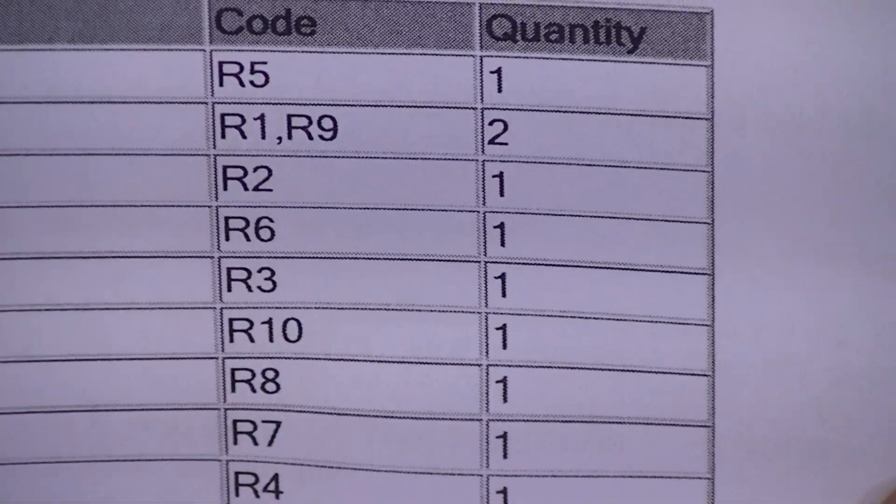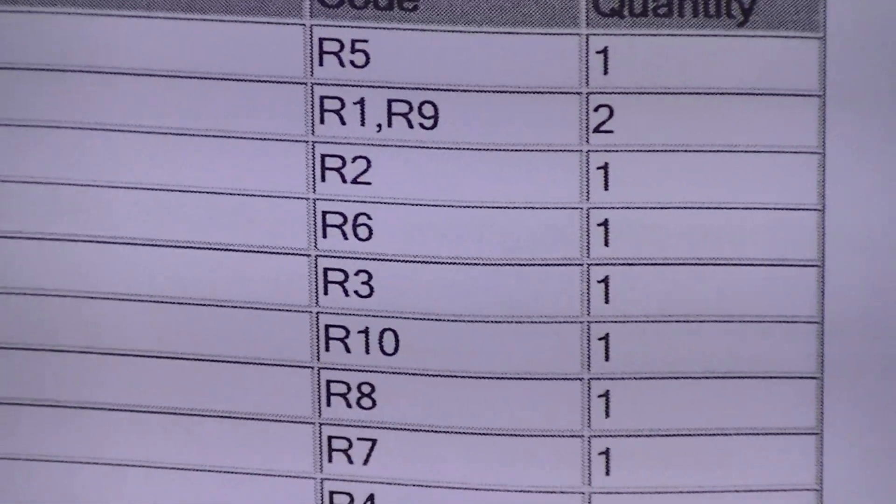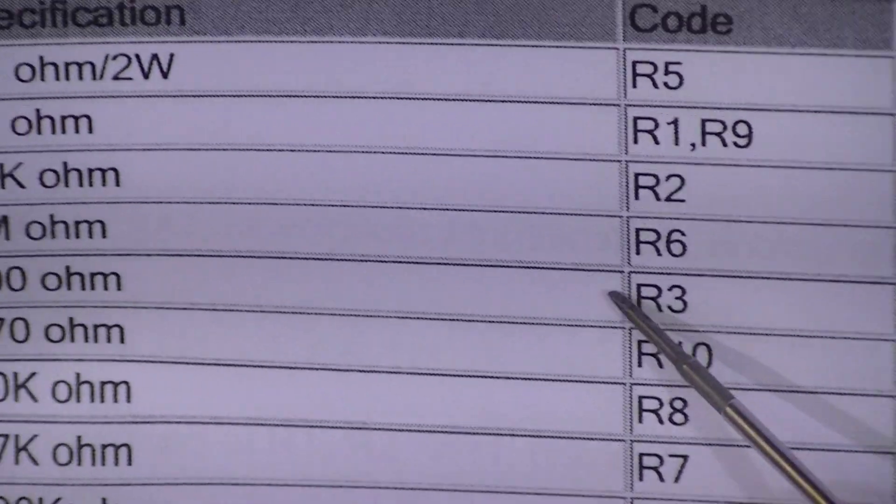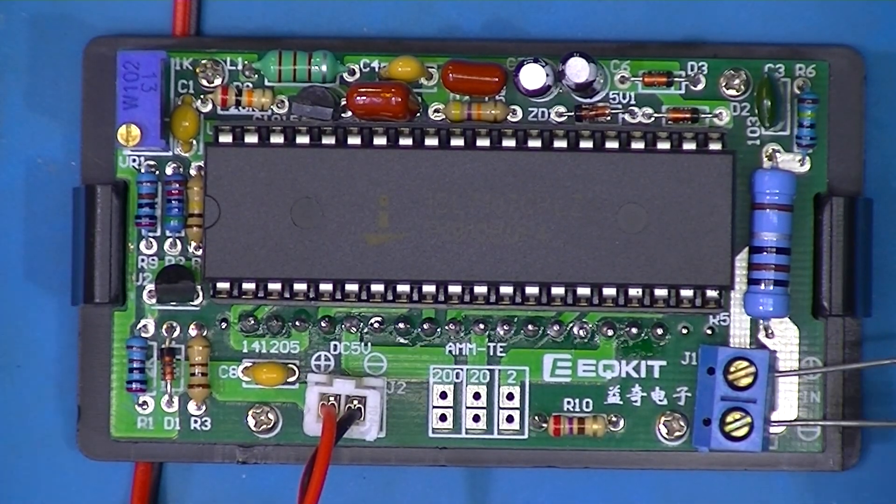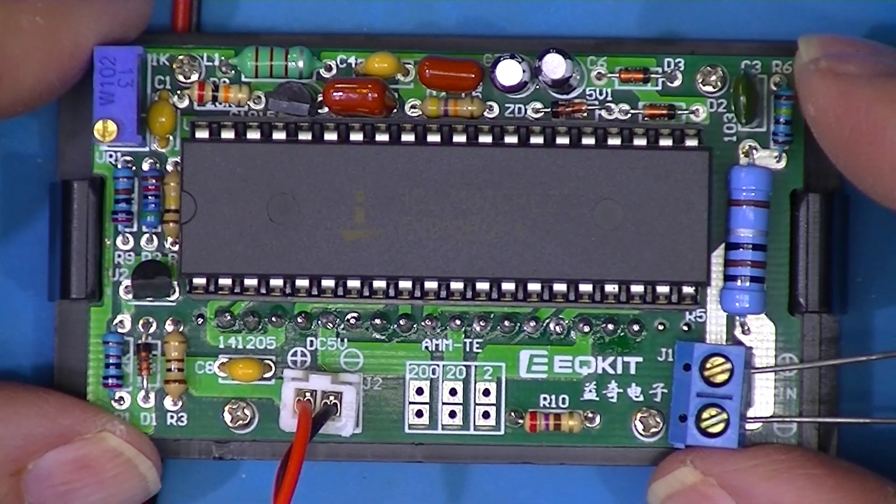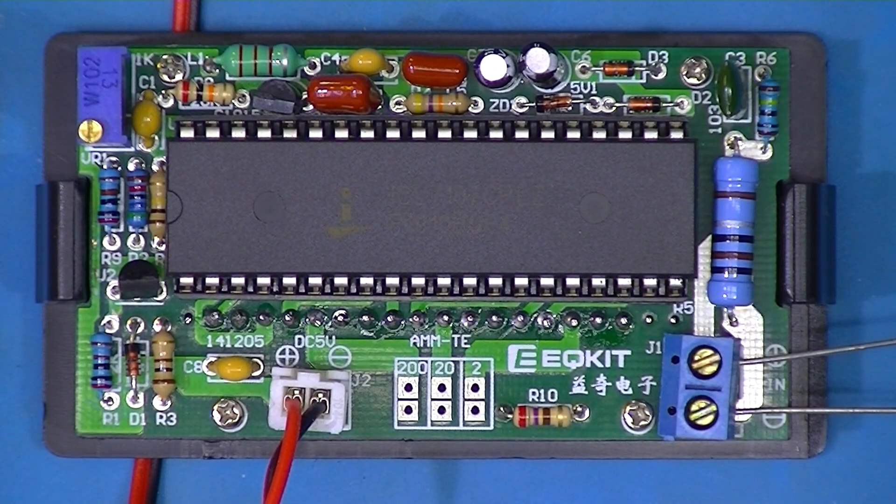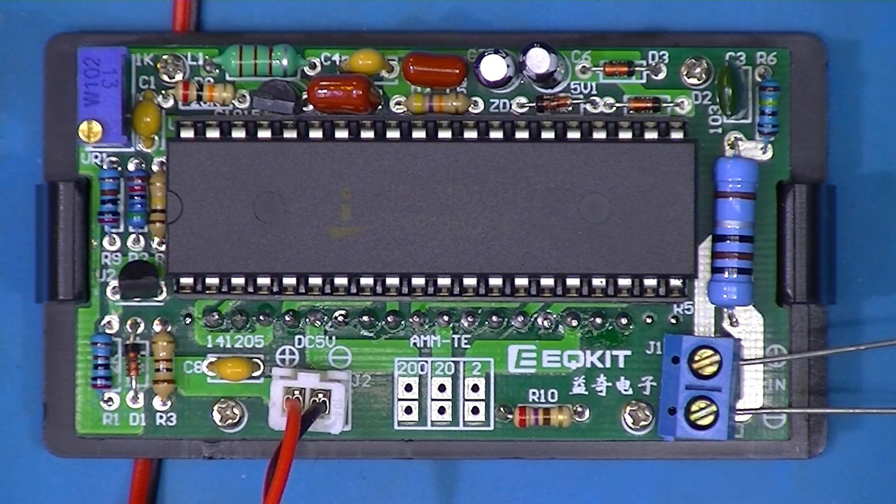So here we have R3 and it's a 100 ohm and so on the whole way across. I'll leave you staring at the ammeter kit. I have yet to install the jumper for the decimal point at this point.